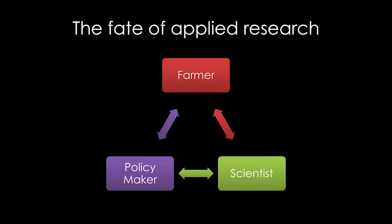When we're thinking about where applied research goes, it's an interaction between the farmer, the scientist, or any other decision-maker that the research is geared towards. And it really has to have some type of feedback loop in order to be effective.